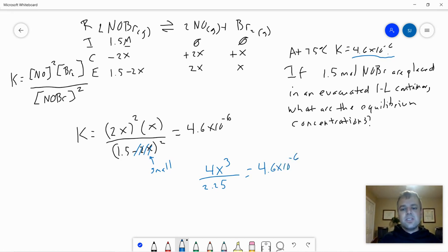Now this is an expression that all of you can hopefully solve. So to find X, we need to take our 4.6 times 10 to the negative 6th, multiply it by 2.25, divide it by 4, that's 2.58 times 10 to the minus 6th. And then we need to take the cube root of it, or we raise it to the 1 third power, if you're not sure how to do a cube root on your calculator. And X equals 0.014.